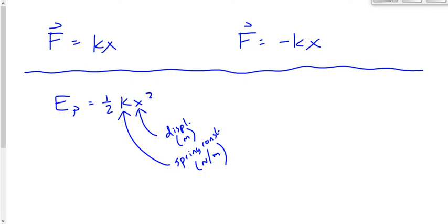Is elastic potential energy a vector or a scalar? It's a scalar. All types of energy are scalars, whether we're talking about kinetic energy, gravitational potential energy, or elastic potential energy.